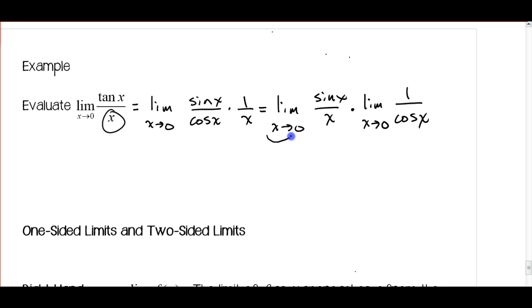And in the previous video, we figured out that this limit, we used a chart to figure out that that limit is equal to one, and we can use direct substitution on this part. Plug in zero, cosine of zero is one.